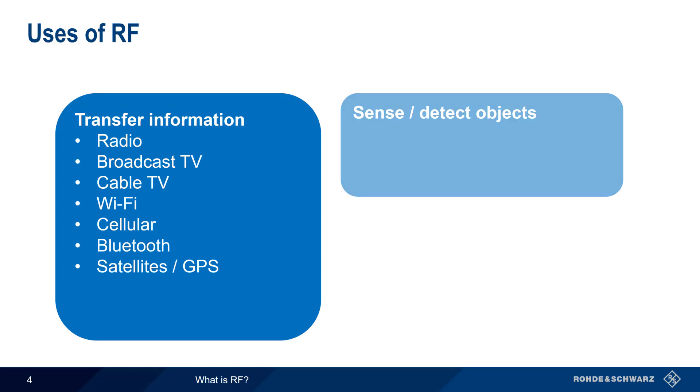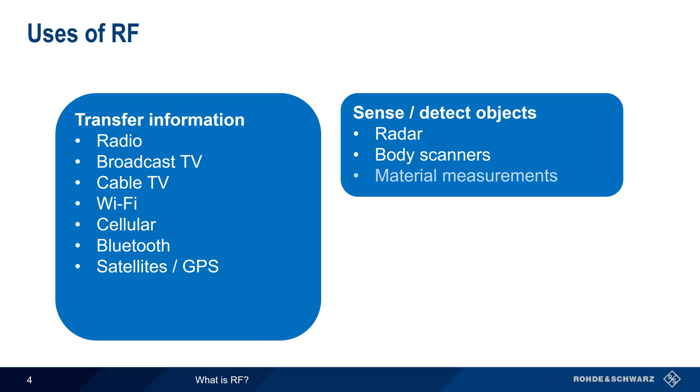Another area of use for RF is sensing or detecting objects. Here, RF is transmitted, and the characteristics of the received RF can provide us with information about the objects that it encounters. Radar is a very well-known example of this. The body scanners found in airports also use RF to detect objects. And RF can even be used to measure the properties of materials.